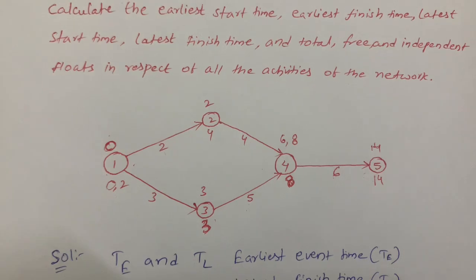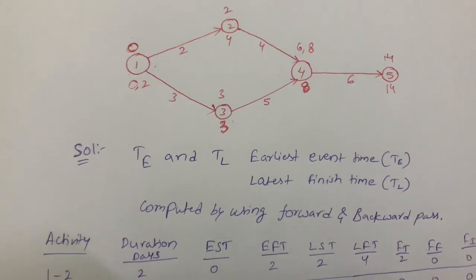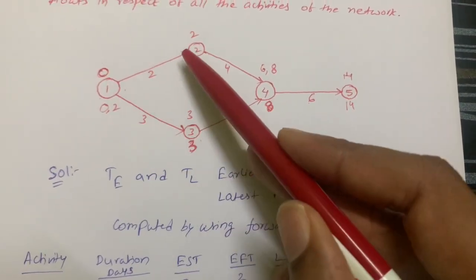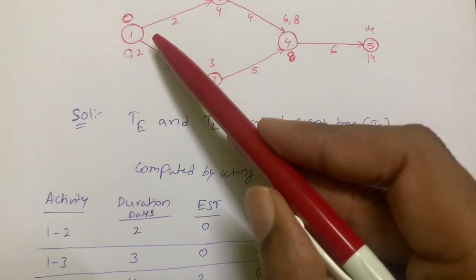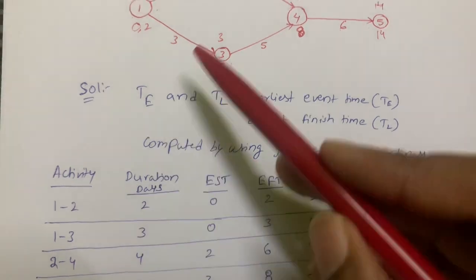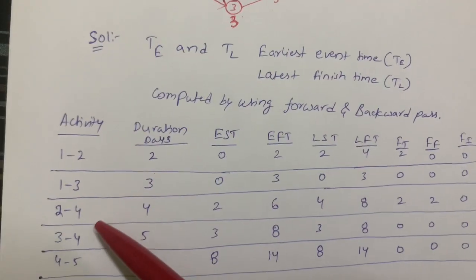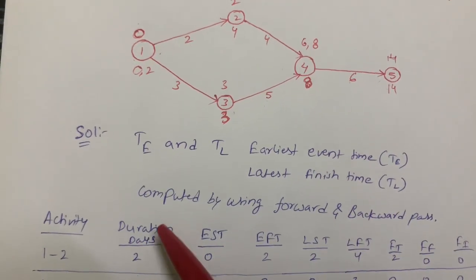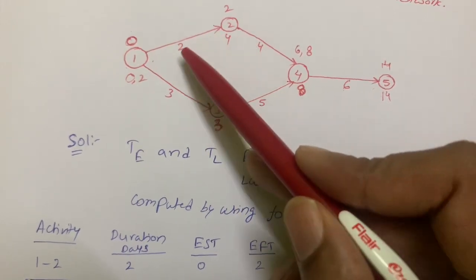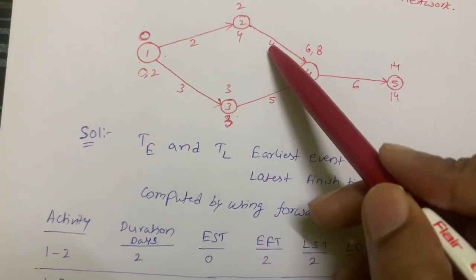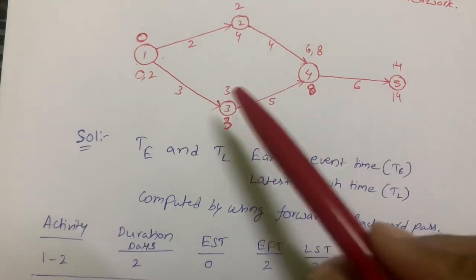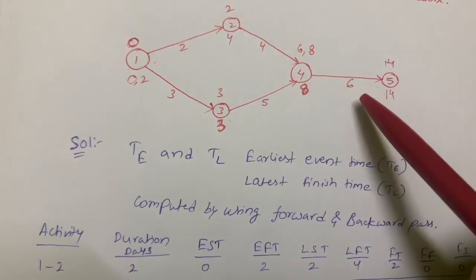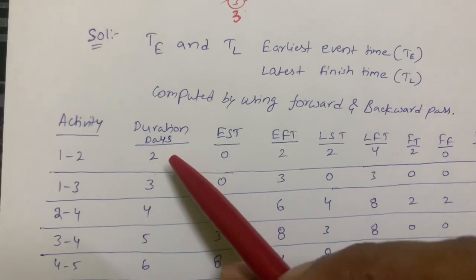I've listed all the activities in tabular form. Activity is denoted by an arrow mark, so 1-to-2 is an activity. The activities are: 1-to-2, 1-to-3, 2-to-4, 3-to-4, and 4-to-5. The durations given are: 1-to-2 took 2 days, 2-to-4 took 4 days, 4-to-5 took 6 days, 1-to-3 took 3 days, 3-to-4 took 5 days, and 4-to-5 took 6 days.